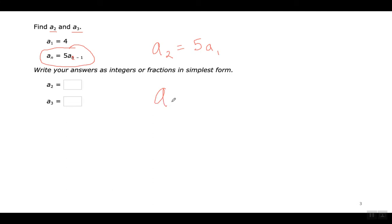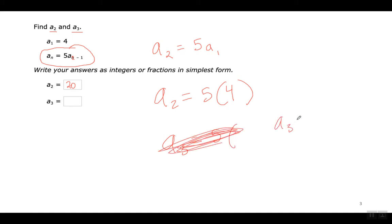So the second term is equal to 5 times the first term. It says here the first term is 4, so the second term is 20. The third term: when I put a 3 here, this will be 3 minus 1, which is 2. So the third term in the sequence will be 5 times the second term in the sequence. El tercer término en la secuencia sería 5 multiplicado por el segundo término.